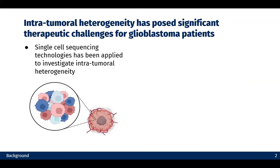So why are we not able to derive very effective therapies for glioblastoma patients? We think one of the reasons is actually intratumoral heterogeneity, meaning although the tumor cells are from the same tumor, they can still be intrinsically different from each other.